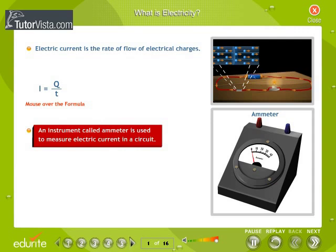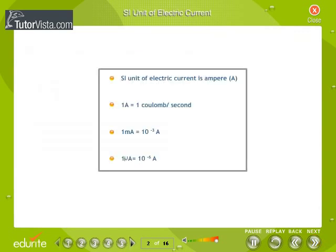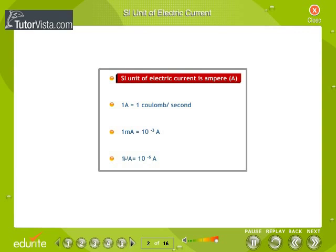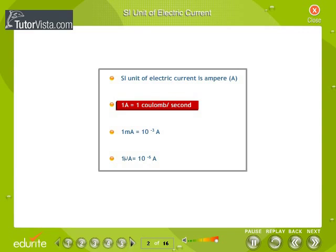An instrument called ammeter is used to measure electric current in a circuit. SI unit of electric current is ampere (A). 1A is equal to 1 coulomb per second.